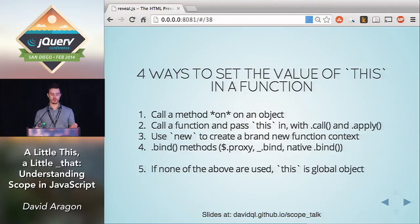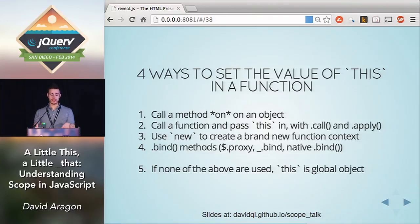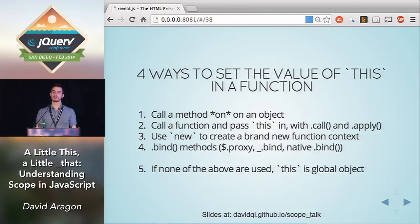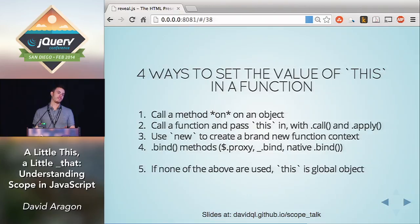That's all there is to it — four ways to set the value of `this`: one, call a method on an object and `this` will be the object; two, use `.call` and `.apply` to explicitly pass in the value of `this`; three, use `new` and `this` will start as an empty object; four, use bind methods, either the native one or third-party alternatives. An important fifth rule: if none of these four rules are used, `this` will default to the global object.